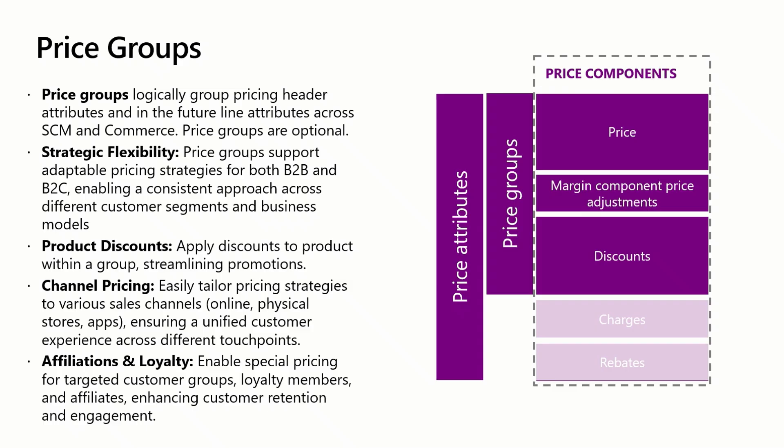When it comes to channels, price groups make it easy to tailor pricing strategy based on the operational cost of different platforms like online stores, physical locations, or mobile apps. Affiliations and loyalty programs provide an additional layer of flexibility by allowing you to offer special pricing to specific groups such as employees or loyalty program members without needing to constantly reconfigure your pricing setup.